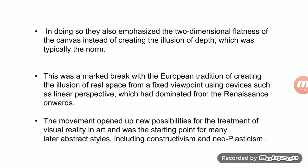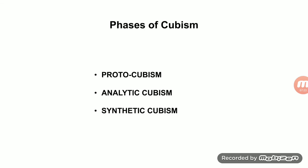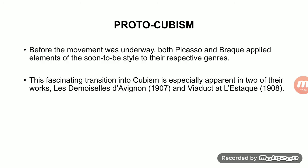Constructivism and Neoplasticism became a base, as they were influenced by Cubism. There were some phases in Cubism: Proto-Cubism, Analytical Cubism, and Synthetic Cubism. In Proto-Cubism, before the movement was fully underway, both Picasso and Braque applied elements of the soon-to-be style to their respective work.